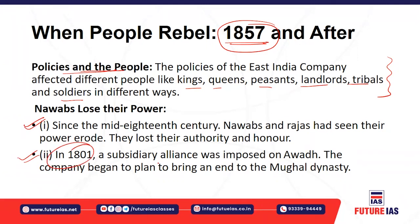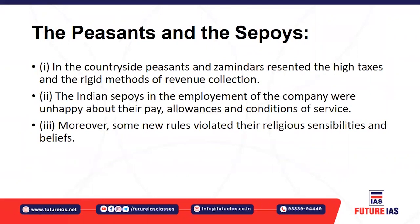In 1801, subsidiary alliances were imposed on Awadh, in which subsidiary forces were to be stationed there. The East India Company also started planning to bring about the complete end of the Mughal dynasty, ultimately trying to get control over the vast Indian subcontinent. We'll now see the effect of British policies on different sections of society.